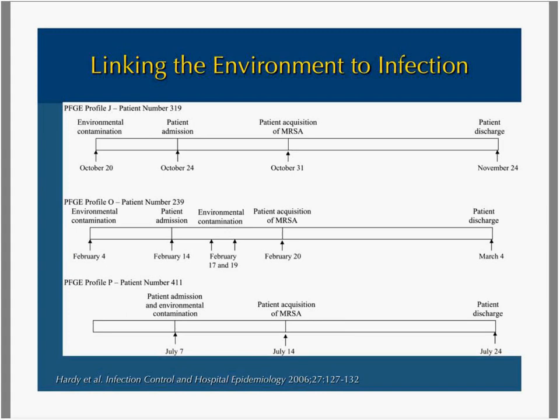These are probably some of the most compelling data out there. This is a study done by Hardy et al. Looking at three separate patients, the top two bars look at environmental contamination. Following along to the right, you can see the date the patients were admitted, and you can then see where all three patients actually acquired MRSA. They did molecular typing and demonstrated that the patient strain was the same as the environmental strain.